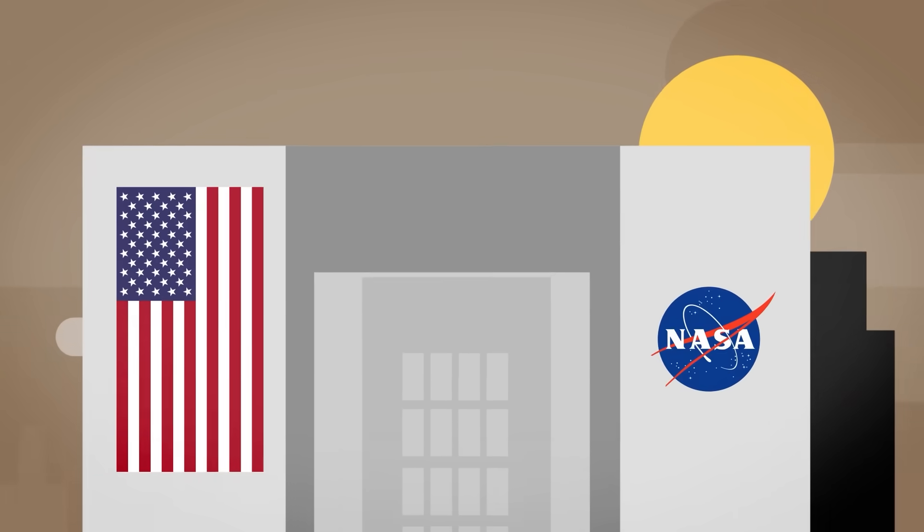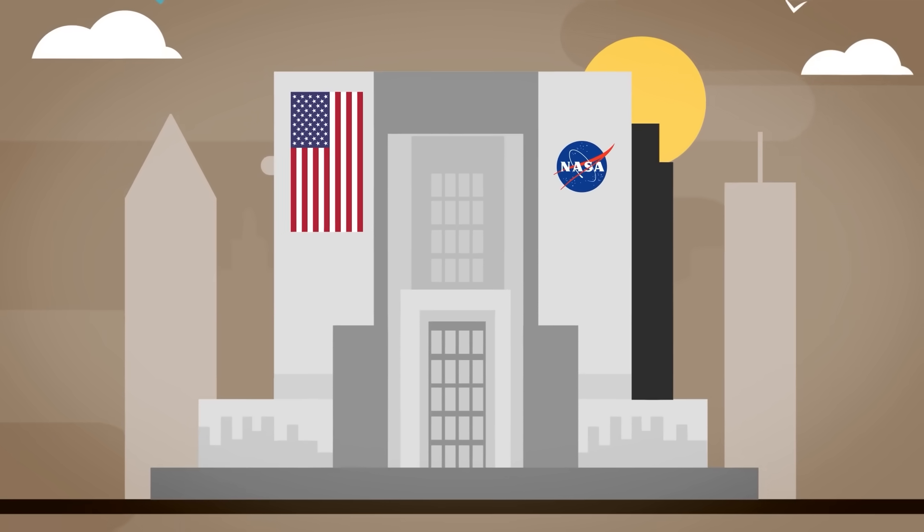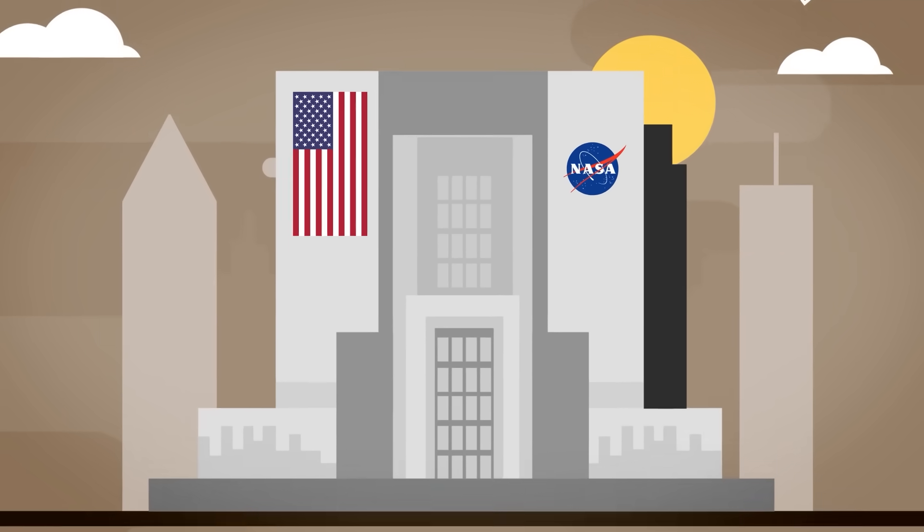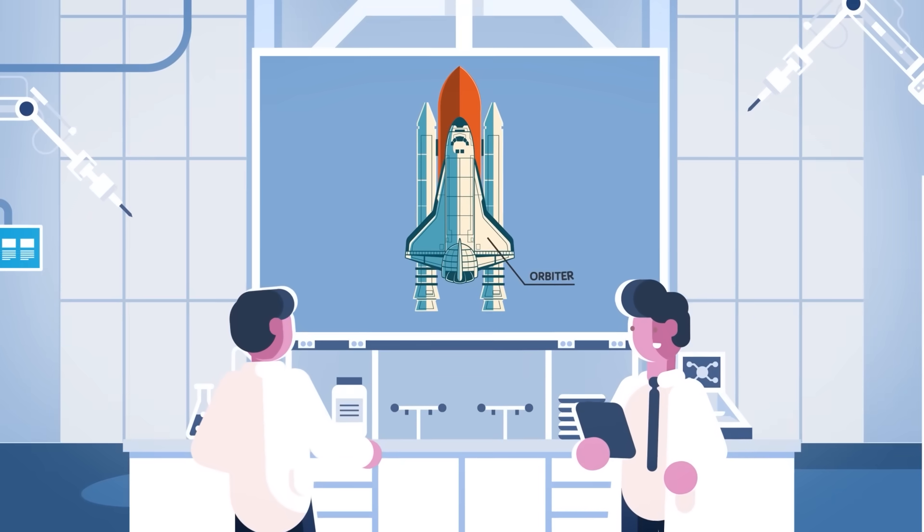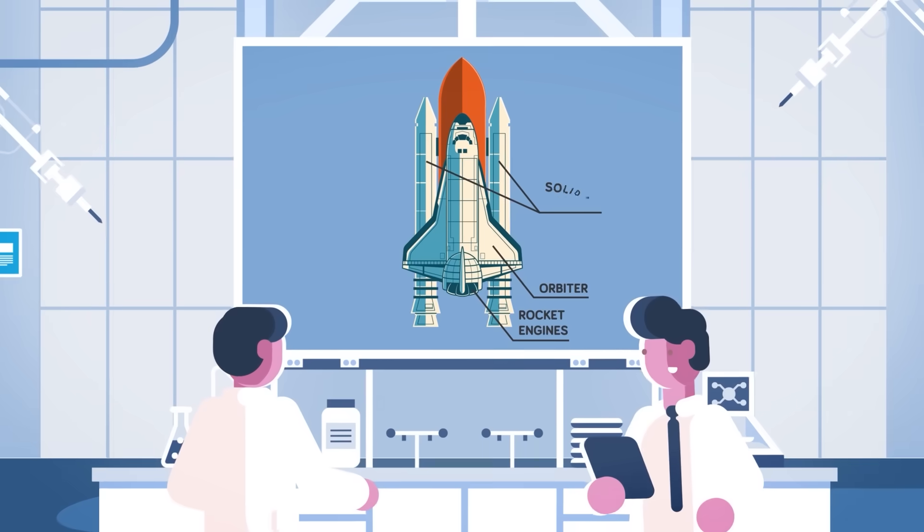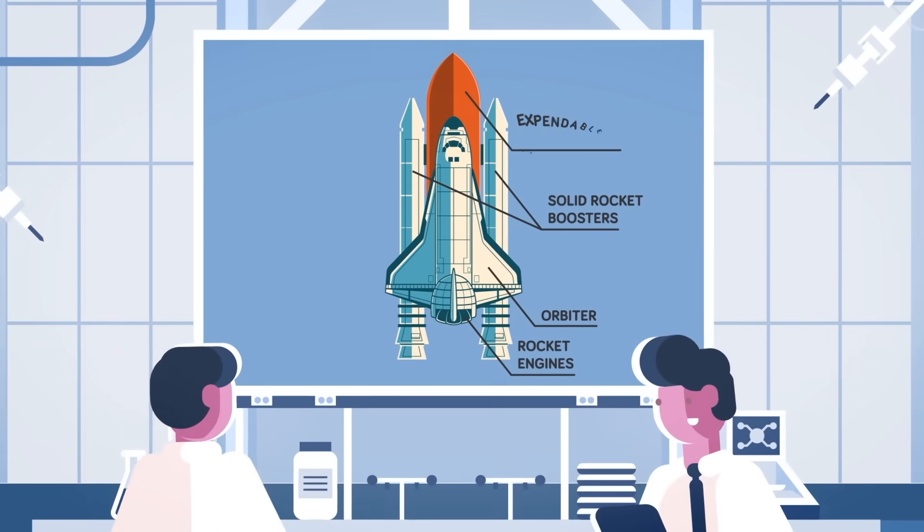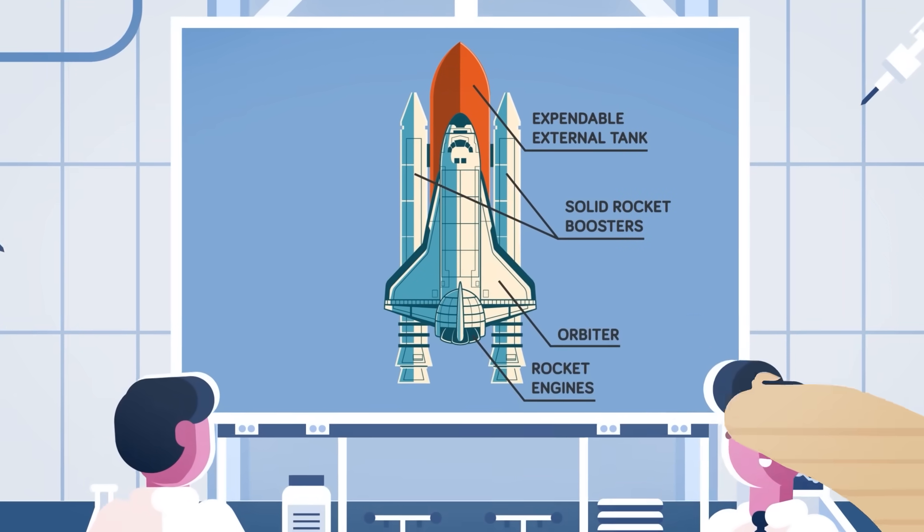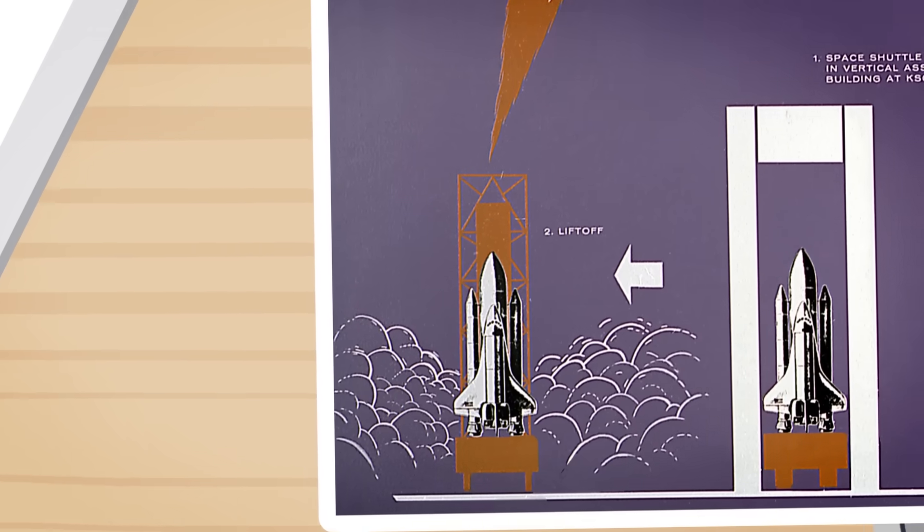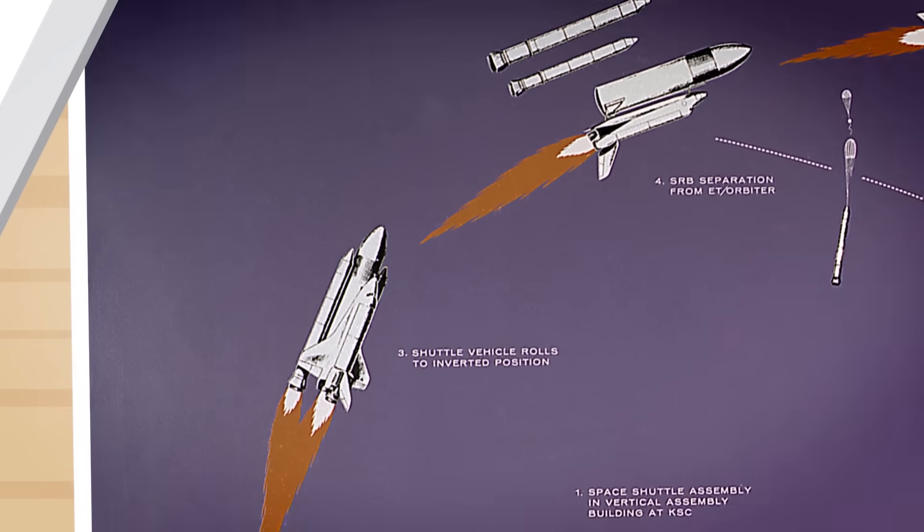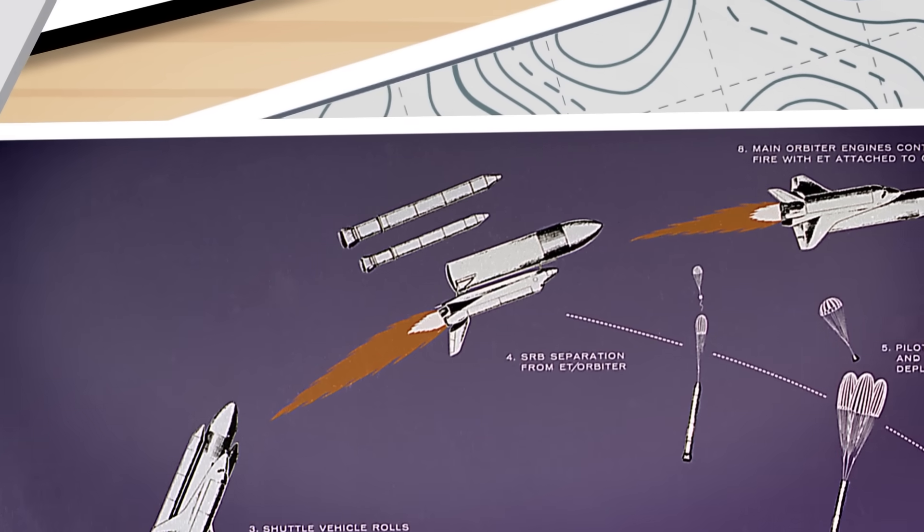The Space Shuttle was a partially reusable NASA spacecraft system that was operated from 1981 to 2011. Its components included the orbiter vehicle, which served as the space plane, three rocket engines, a pair of solid rocket boosters, and an expendable external tank. The Space Shuttle launched vertically like a typical rocket.